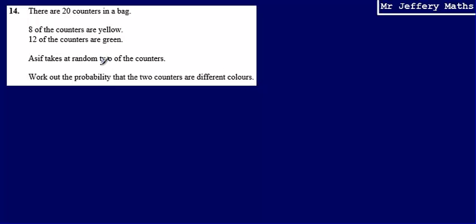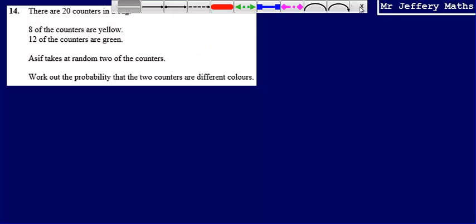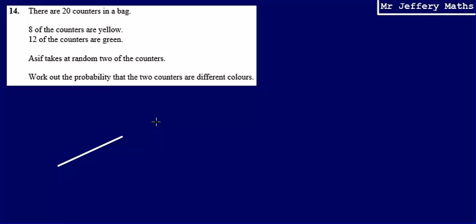Now because what we're talking about here is 2 events, that he takes 2 of the counters, we're going to need to draw a probability tree diagram. So what we're going to do is we're just going to lay out all of the possibilities that could potentially happen.